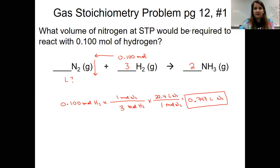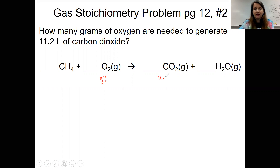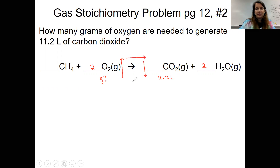Let's take a look at the next question: how many grams of oxygen are needed to generate 11.2 liters of carbon dioxide? We have to have a balanced reaction. We know we're going to have to do stoichiometry because it's talking about oxygen and carbon dioxide. We balance the reaction — we need a two in front of our water and a two in front of our oxygen. So we have to go up, over, down — three steps to our stoichiometry sequence. Our given is 11.2 liters of CO₂.